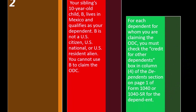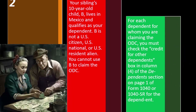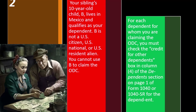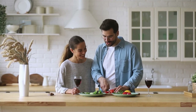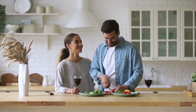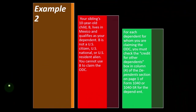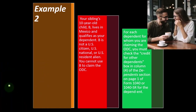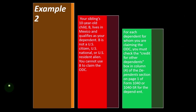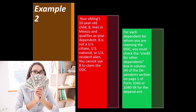For each dependent for whom you are claiming the ODC, you must check the 'Credit for Other Dependents' box in column 4 of the dependents section on page 1 of Form 1040. All your dependents' social security numbers and names are on page 1, and you check next to their name if they qualify for the child tax credit or the other dependent credit — they can only qualify for one or the other, not both. On page 2, you calculate the credit.